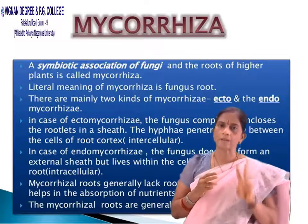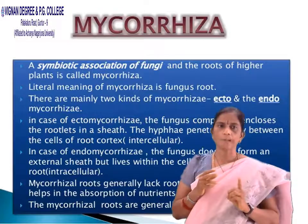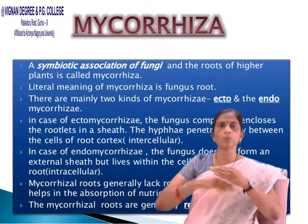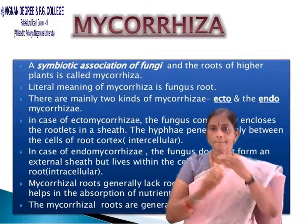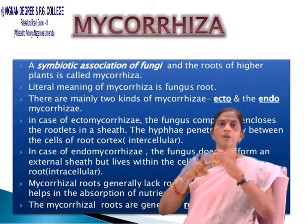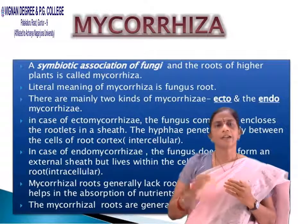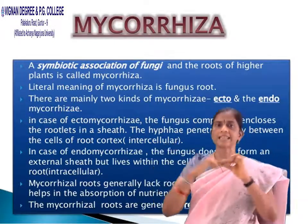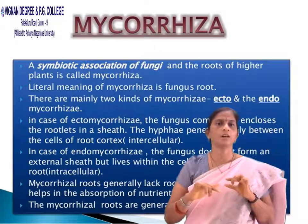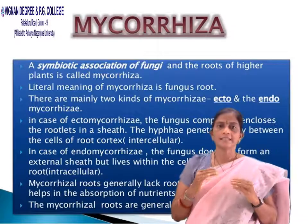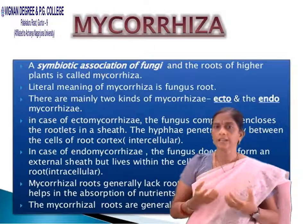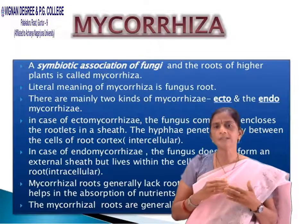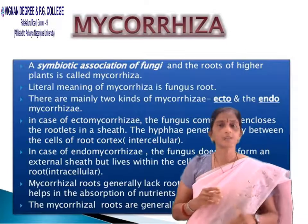There are two main kinds of mycorrhiza: ectomycorrhiza and endomycorrhiza. In ectomycorrhiza, the fungi completely enclose the rootlets in a sheet, and hyphae penetrate only between the cells of the root cortex. In endomycorrhiza, the fungi live within the cells of the root. Mycorrhizal roots generally lack root hairs and help in the absorption of nutrients, and are resistant to infection.